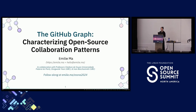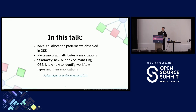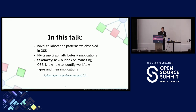We scraped over 50 large open source projects hosted on GitHub and developed a novel graph-based perspective that we're calling the GitHub PR issue graph. Today I'll be talking about the novel collaboration patterns we observed, as well as the attributes of this PR issue graph and their implications. You'll walk away with a new outlook on managing open source development, able to identify common patterns of collaboration and understand what they might mean for your project and community. I hope this talk will spark some discussion about how you can be more mindful of these workflow types as we lead open source development efforts.